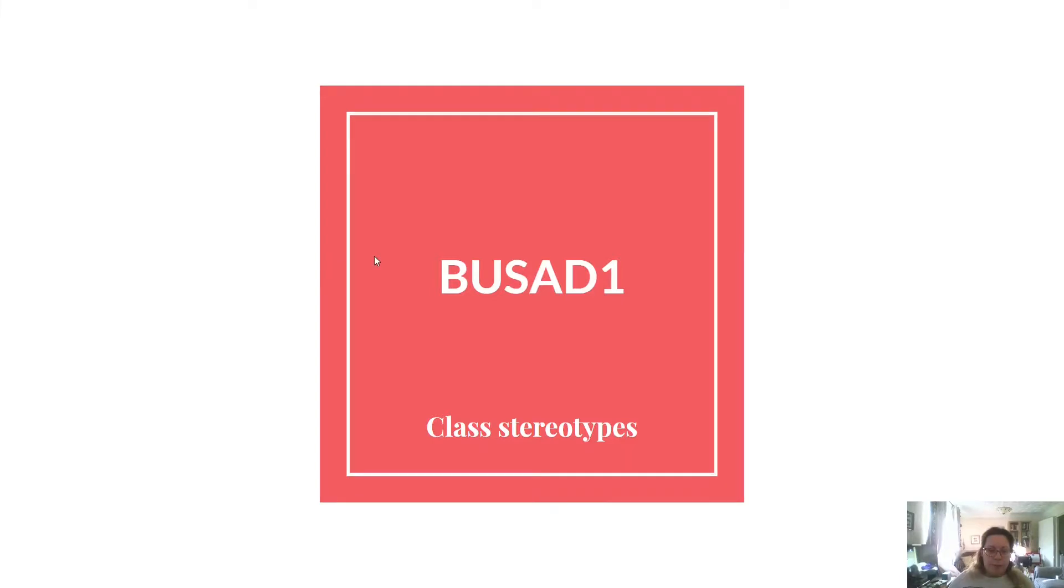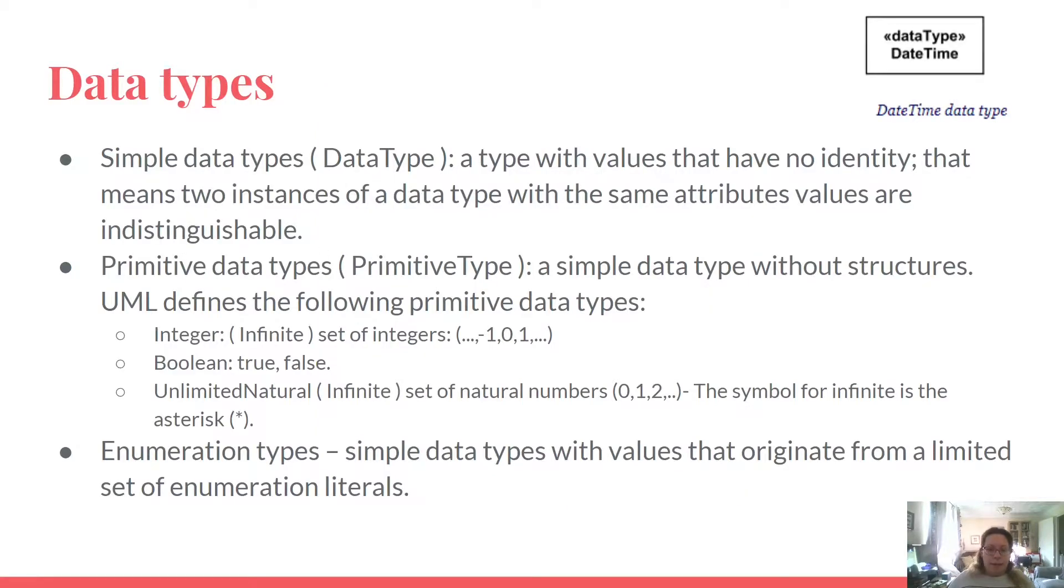We are talking about class stereotypes. A data type is a classifier, similar to class, whose instances are identified only by their value. In UML we distinguish between the following data types.